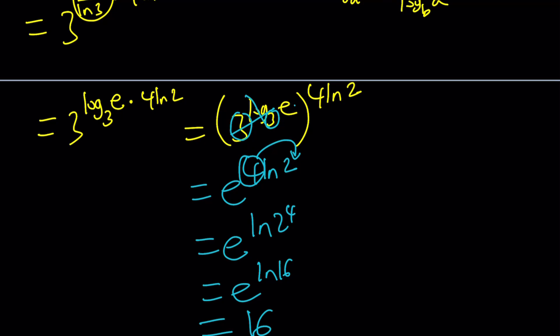This 4 can be moved back and written as e to the power ln 2 to the 4th, which is e to the power ln 16. As you know, that is equal to 16 by definition. In other words, our expression simplifies to 16. So 3 to the power of 6 over x equals 16 if 4 to the power of x is 27. That's the end of the first method.